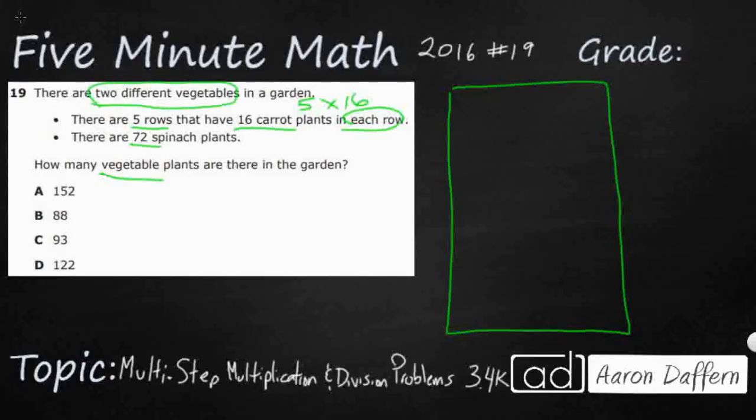Every once in a while they'll give you a problem where you need to exclude one of the numbers because it's not a vegetable — like it's a fruit tree or something — but this isn't that trick. We just need to add these two totals, and the problem is we have one total right now: 72. This other one, the carrots, that is not a total yet.